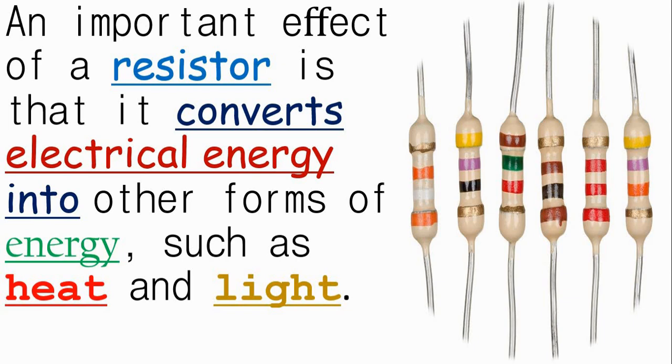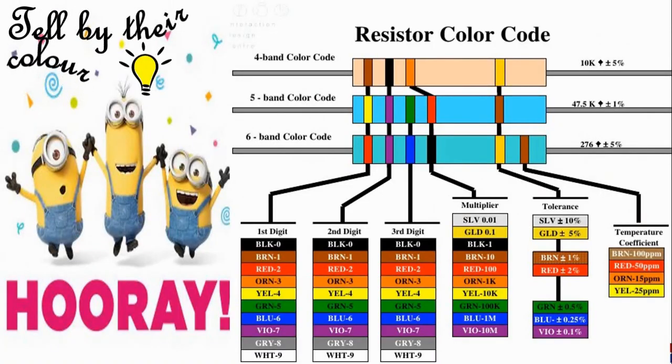Here we have resistors painted in different colors. It's not meant to beautify them, but these colors enable us to determine the value of the resistor without even measuring it. Here is the resistor color code. First we have the 4-band color code. These are resistors that have 4 different colors in them. Next is the 5-band color code, which have 5 colors in them. And finally we have the 6-band color code, which have 6 colors in them. You can pause the video and try to study.